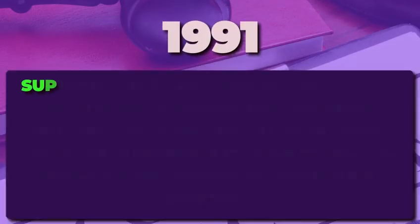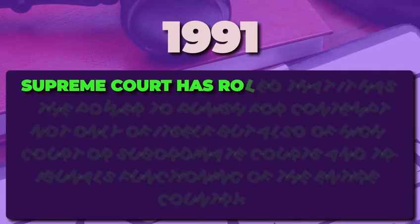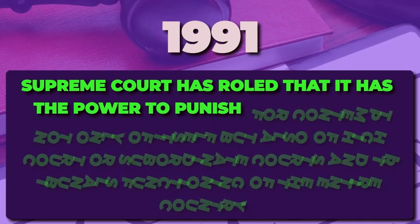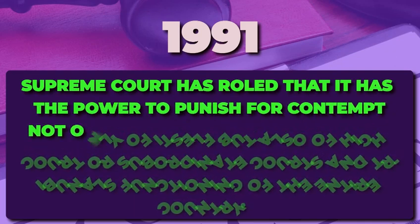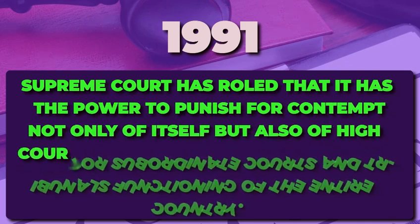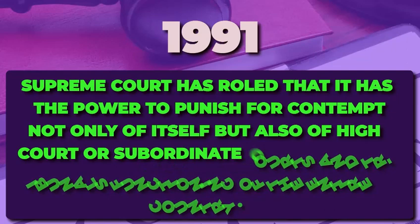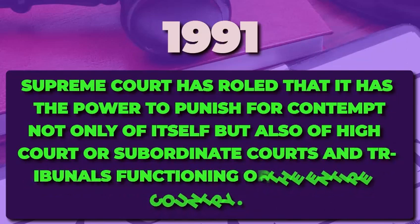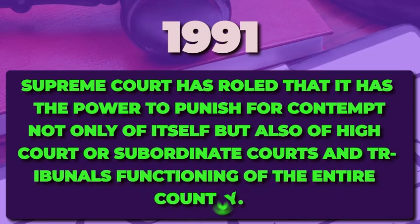In 1991, the Supreme Court ruled that it has the power to punish for contempt — not only of itself, but also of High Courts and Subordinate Courts and tribunals functioning throughout the entire country. Always keep in mind that the Supreme Court and High Court have the power to address contempt of court cases for subordinate courts and tribunals as well.